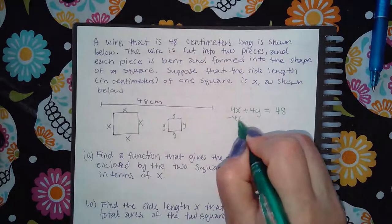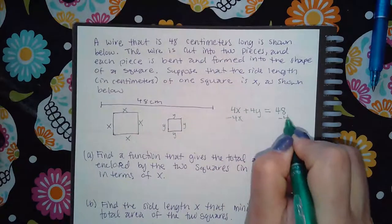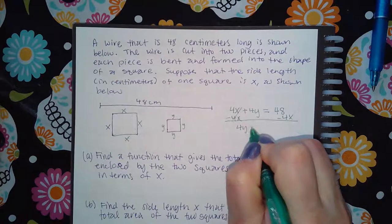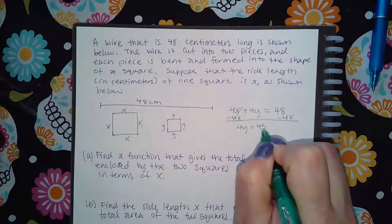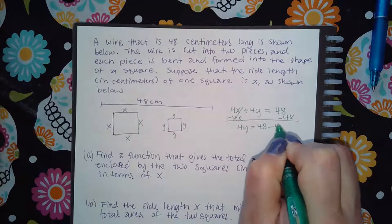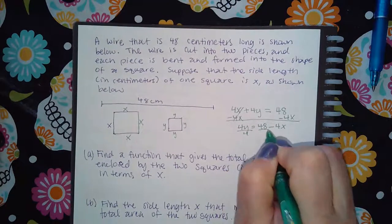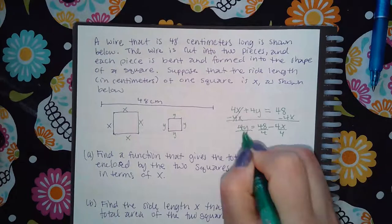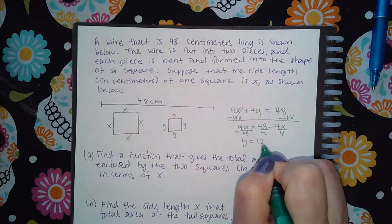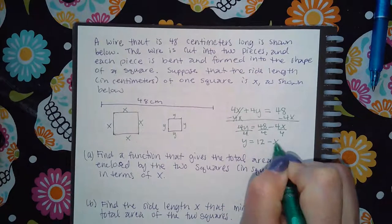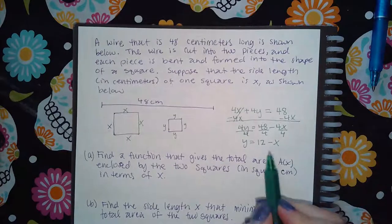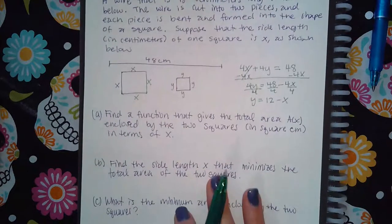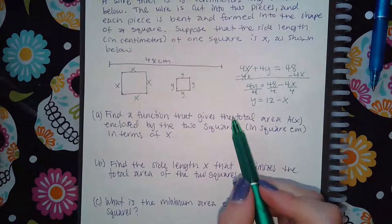Subtracting 4x from both sides: 4y = 48 − 4x. Dividing every term by 4: y = 12 − x. Now I have an expression for y in terms of x.